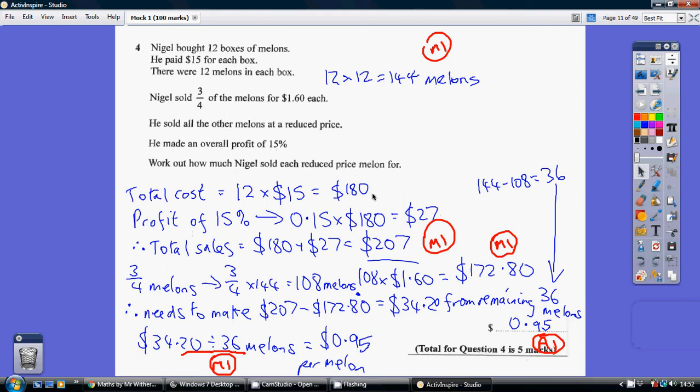Now they cost us $180. Now if we're going to want to make a profit of $27, we're going to have to sell all of them for $207. That's what we've got to sell them for in total.